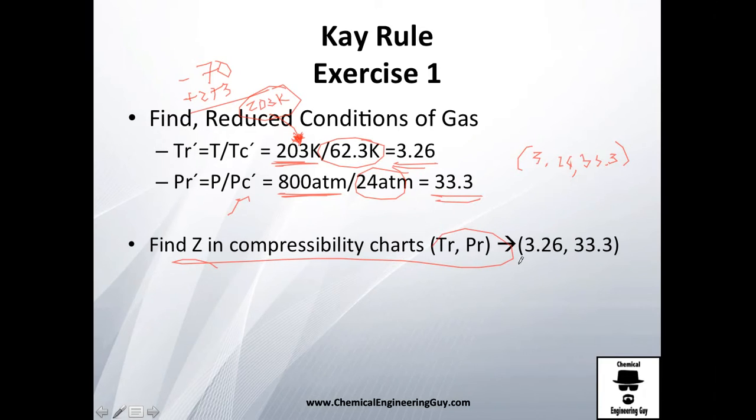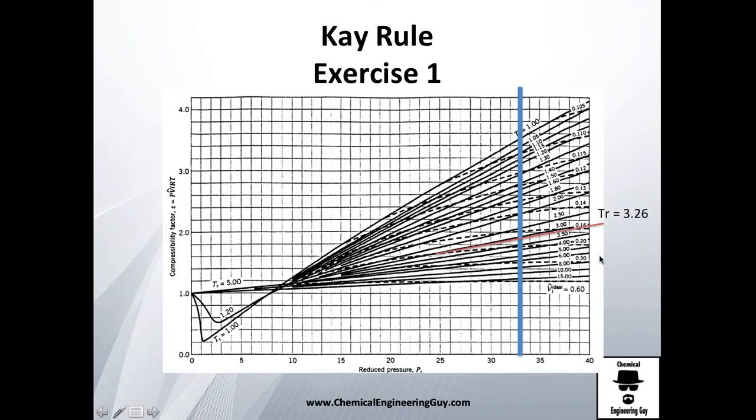The reduced pressure of 33.3 is here on the chart. The reduced temperature of 3.26 is between 3 and 3.5, so around here. I intersect them and go vertically to this axis.